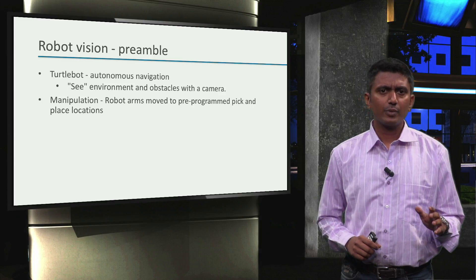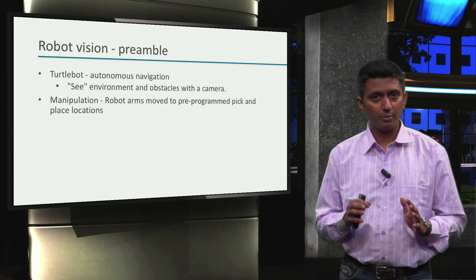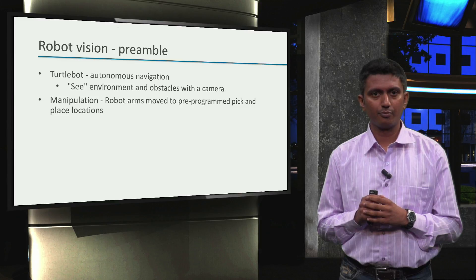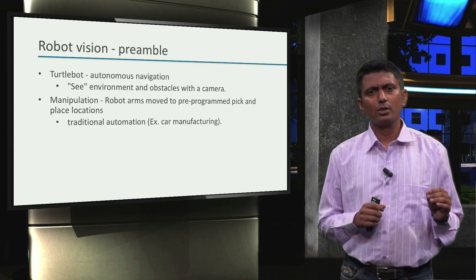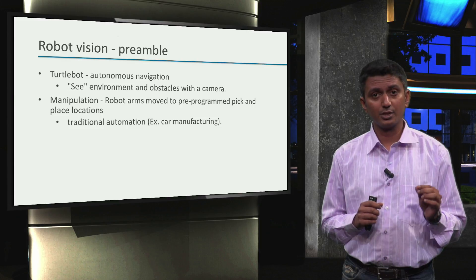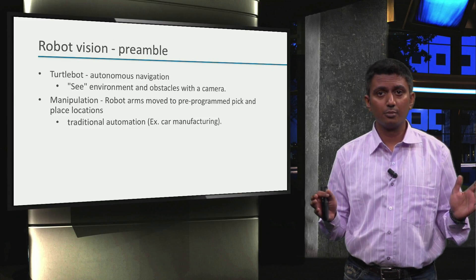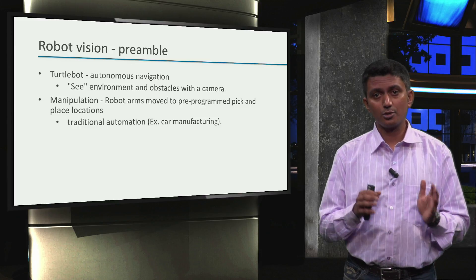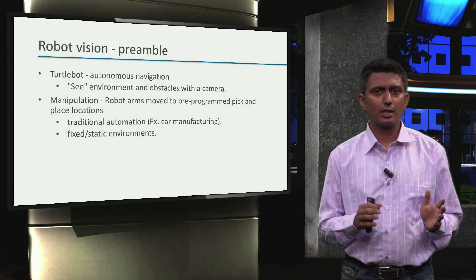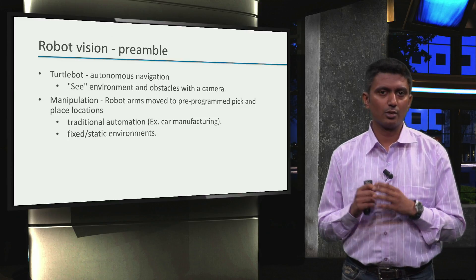However, in week 4, we saw that the robot arm near the conveyor belt moved to pre-programmed pick and place locations. Such a setting is alright in traditional automation settings, like in car manufacturing where different parts come in a predefined location and also go to a predefined location — basically fixed or static environments with known manipulation locations.